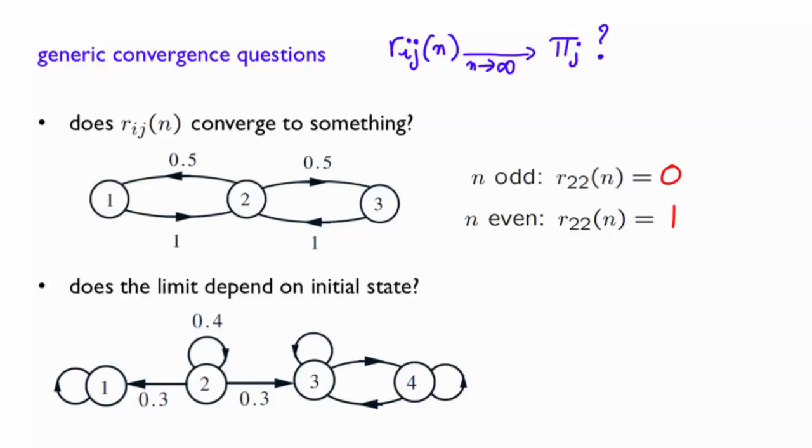If you start in state 1, there is no way you can escape. You are certain to stay there forever. So R11 of n will always be 1.